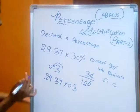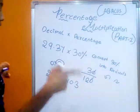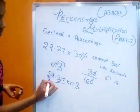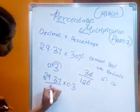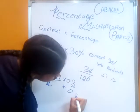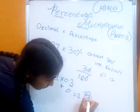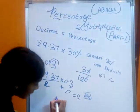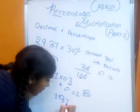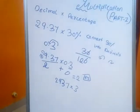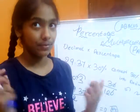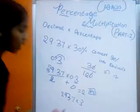Now we will multiply. First we need to find the position. The position: this number has 2 digits before the decimal plus the first number here is 0, so the position is P2. We will multiply without the decimal point — 2937 into 3. The answer is 8811.